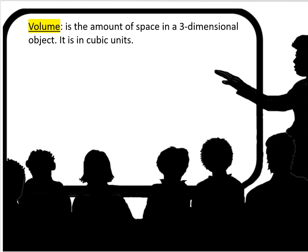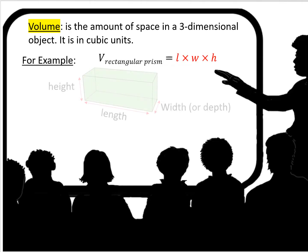Volume is the amount of space in a three-dimensional object. It is always in cubic units. For example, the volume of a rectangular prism is found by multiplying the length times the width times the height — sometimes the width is called the depth.